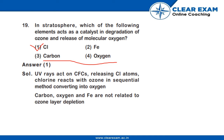UV light acts on CFCs releasing chlorine atoms. Chlorine reacts with ozone in a sequential method, converting it into oxygen. Carbon, oxygen, and Fe are not related to ozone degradation.